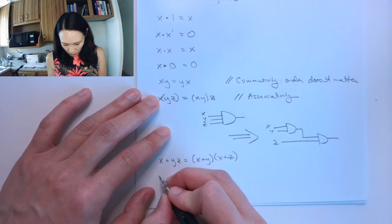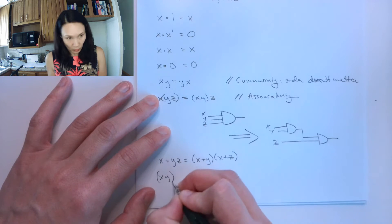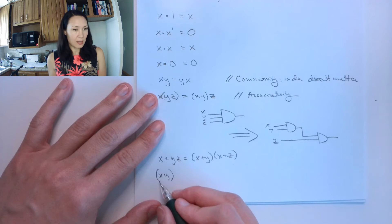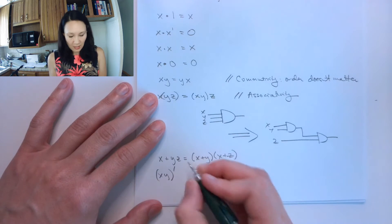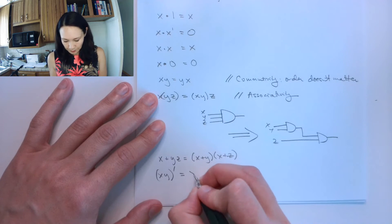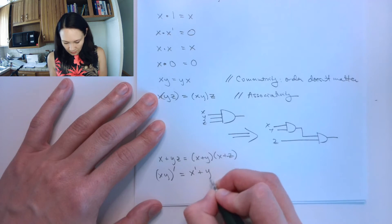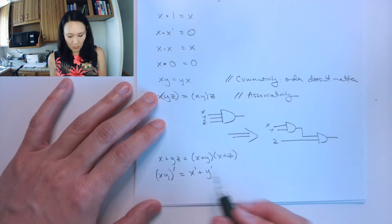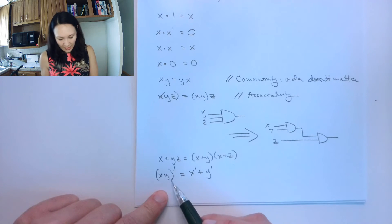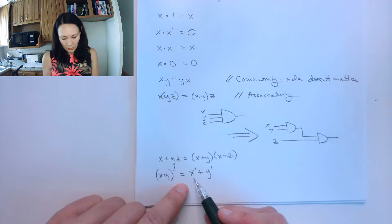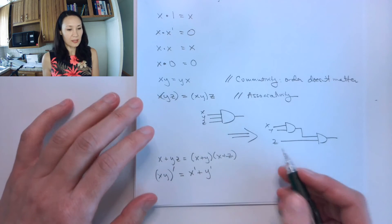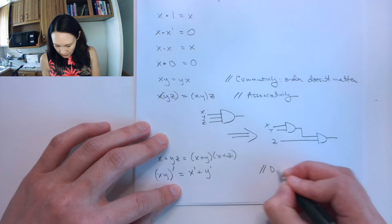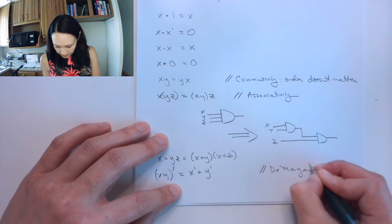To finish up, the other one that's important that we're going to talk about at length later is DeMorgan's theorem. It says that if you take inputs x and y and you invert it, that's equivalent to inverting x and then ORing it with y inverted. So x, y naught is equivalent to x naught OR y naught. This is going to be really helpful when we are taking complements. This is called DeMorgan's theorem.